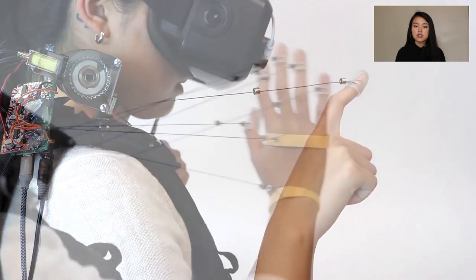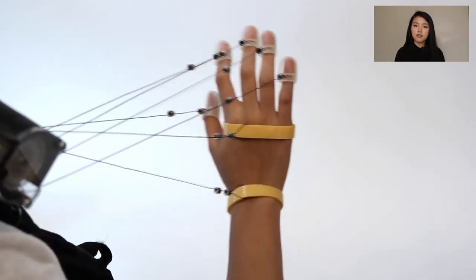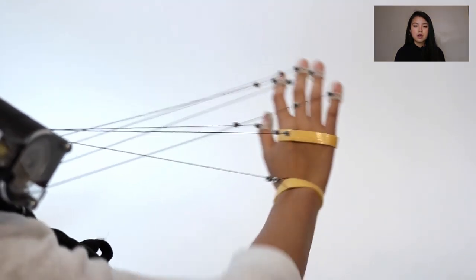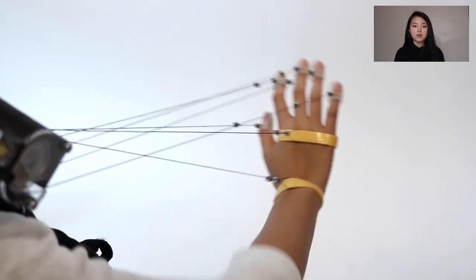For our final implementation, we combine seven modules together and attach strings to the five fingertips, the palm, and the wrist of the hand. With seven modules acting together, Virality can simulate a wide range of objects.